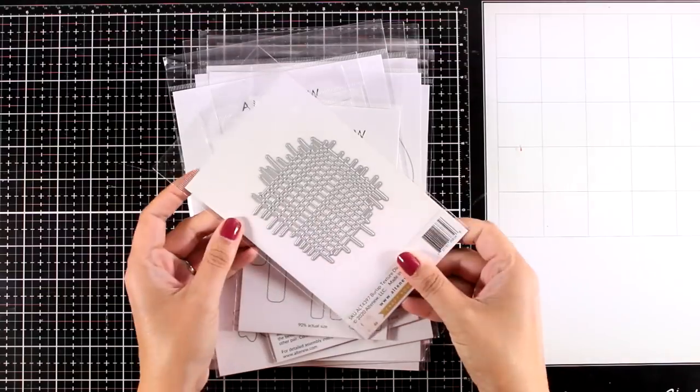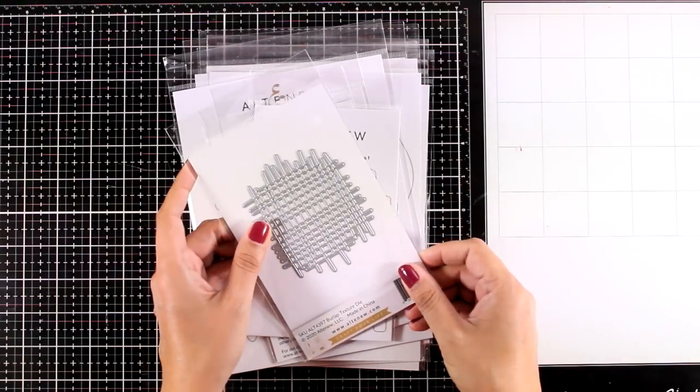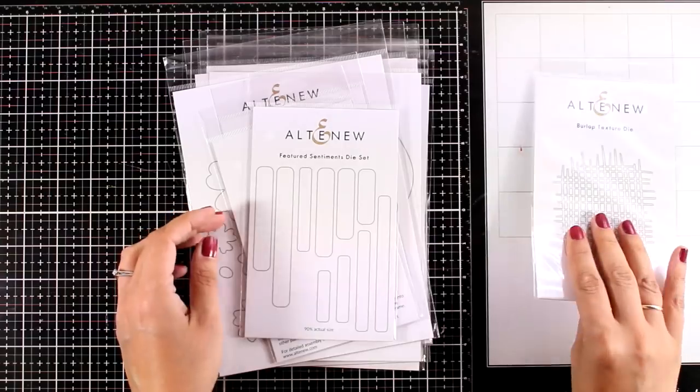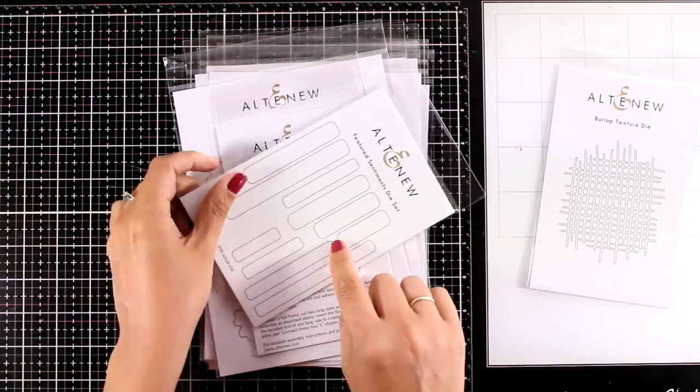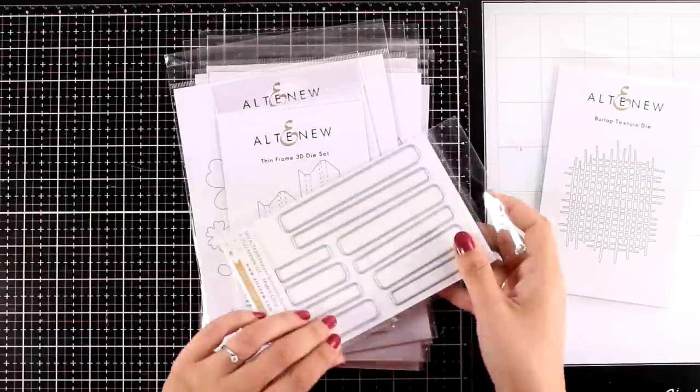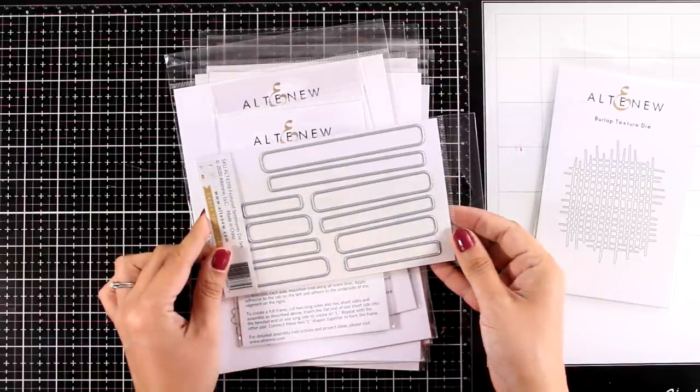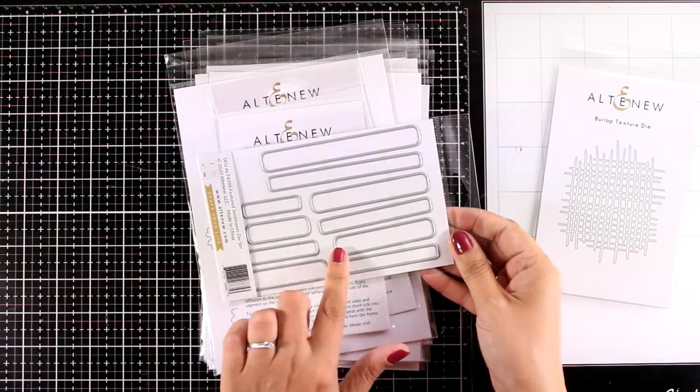Now the first one is this burlap die which is probably my favorite from the whole release. It makes a great background. This is the featured sentiments die set. It comes with many different sizes that you can use to cut out your sentiments and they have a rounded edge.